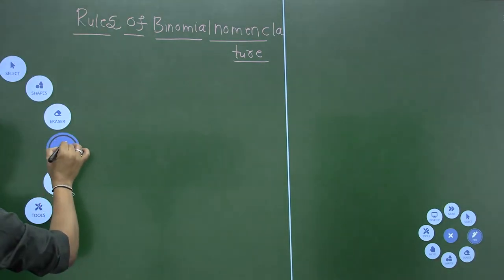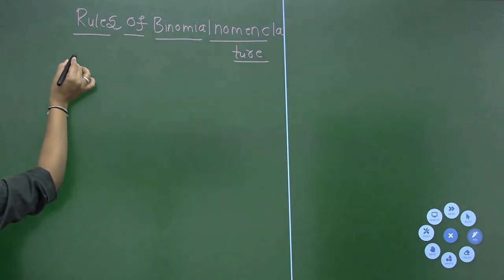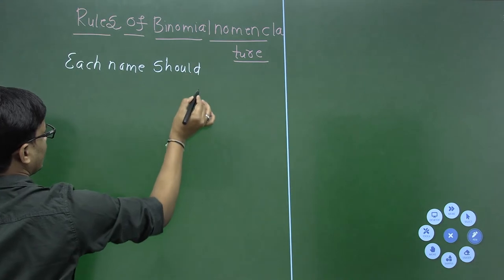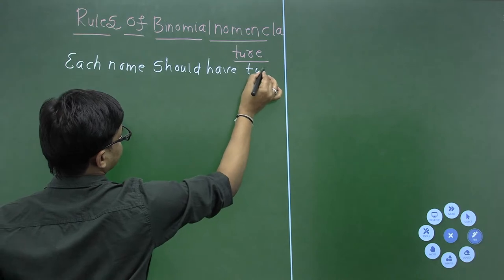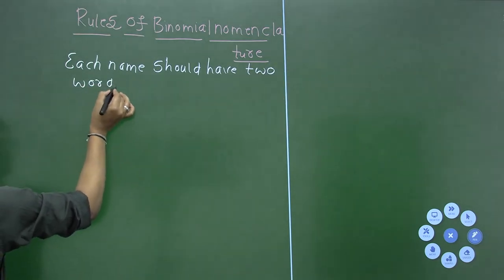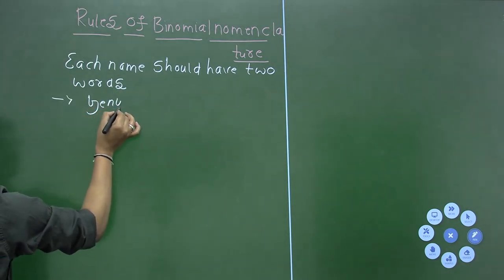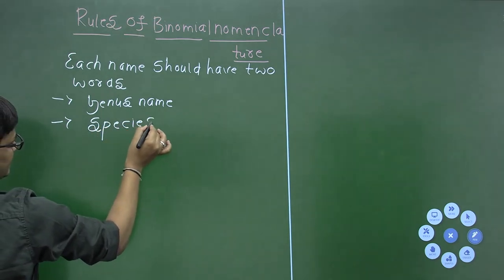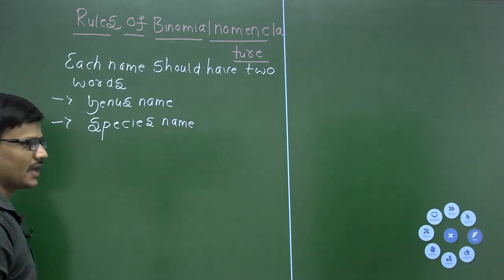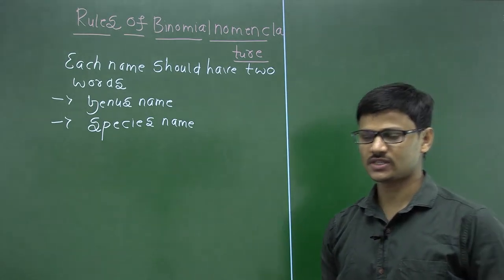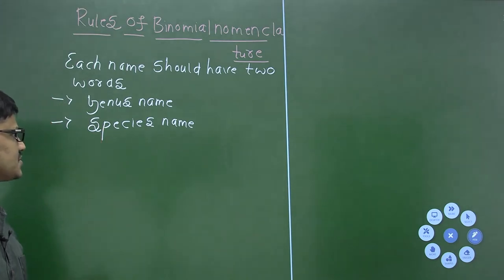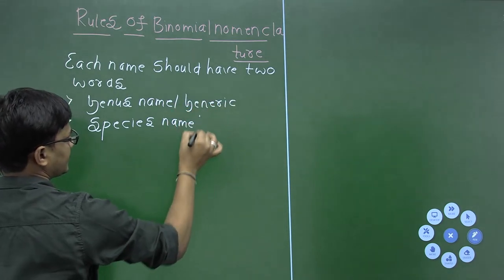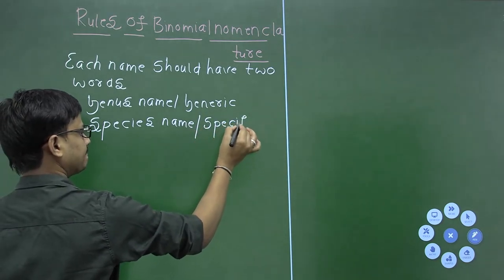The first rule is: each scientific name should have two words — a genus name and a species name. Hence it is called binary or binomial nomenclature. The genus name is also called the generic name and the species name is called the specific epithet.